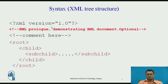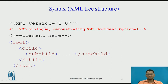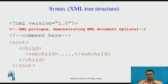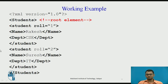This is the XML tree structure showing how an XML document looks. The first line is the XML prologue — also called pre-directives — which indicates that the following document is an XML document. It is optional but recommended for good programming standards. Comments in XML are written by opening the tag with an exclamation mark followed by two hyphens, then your text, and closing with two hyphens and the closing tag. You then start with a root element, child elements, and sub-children, following proper nesting.